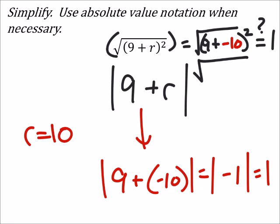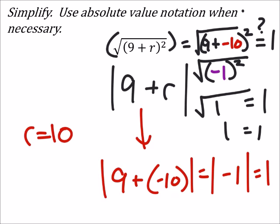So, that would be the square root of 9 plus negative 10 is a negative 1. And if we square negative 1, we get 1. The square root of 1 is 1. So, this 1 is true.